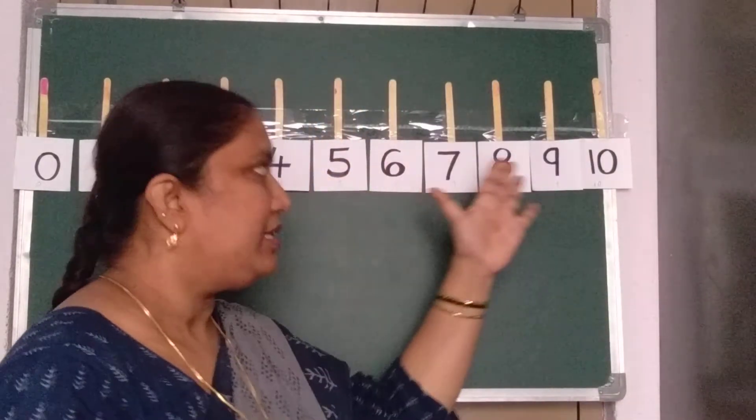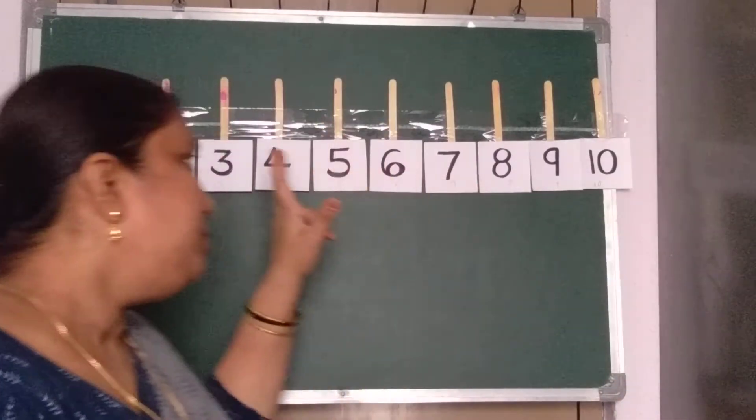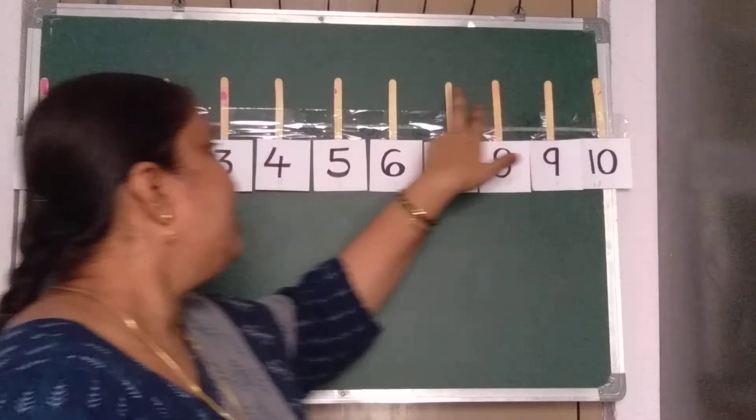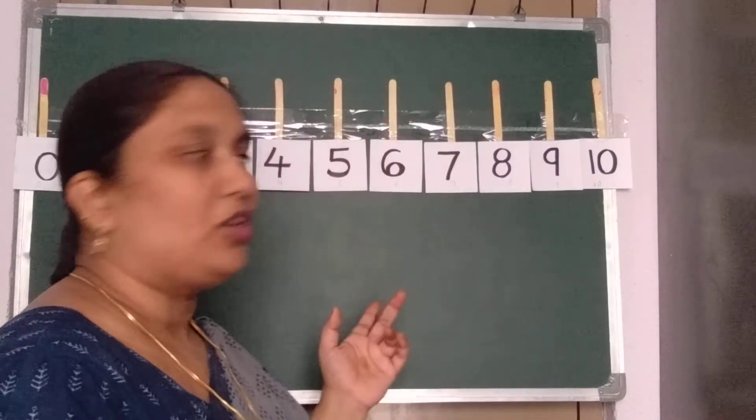So I'll teach you. It is easy. From 0 to 10 numbers already you know. But the gap should become in between the numbers equal. Okay children? Okay. Take out your number notebook. I'll teach you how to draw.